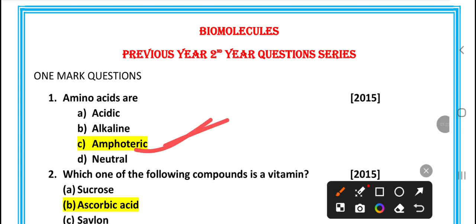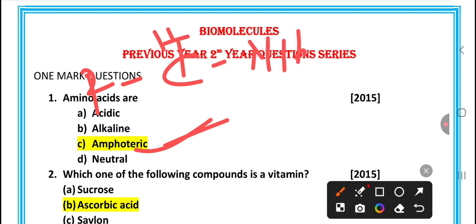Amino acids are amphoteric because they contain both acid and base groups — R, C, H, N, S, C, O, H — meaning they have both acidic and basic functional groups in their structure.